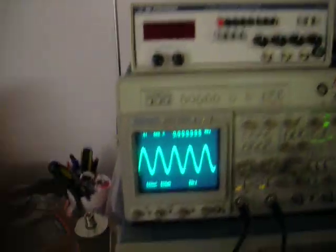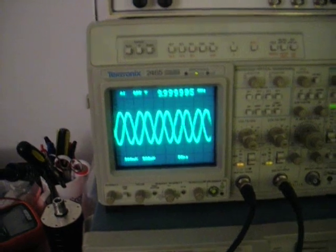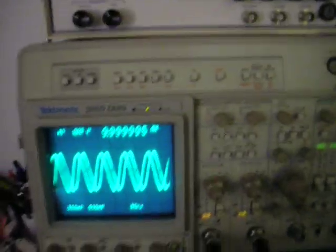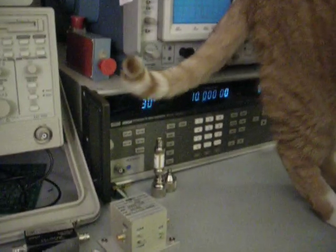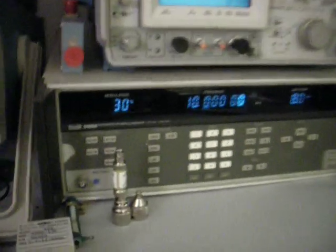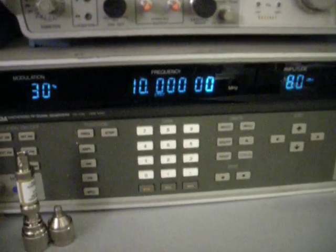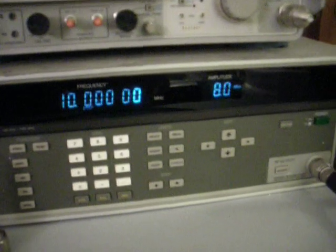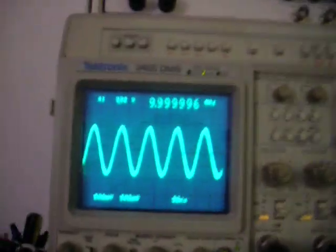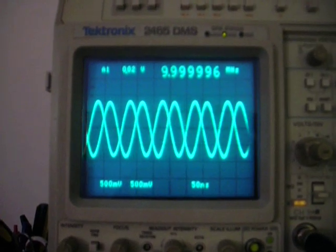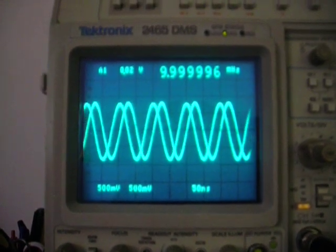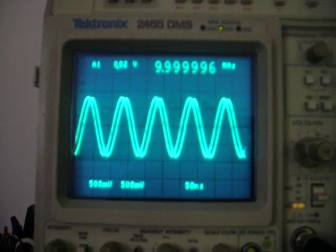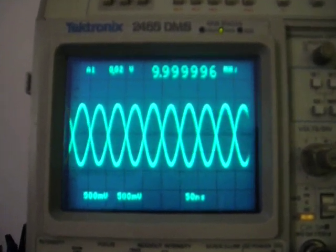Here we are comparing the Fluke Signal Generator, which you see behind Francis there, set to 10 MHz, 8 dBm output, to the Rubidium Standard on the scope. The scope is triggering from the Rubidium Standard.